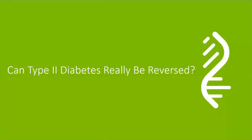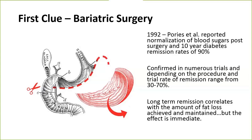The first place to look was back to bariatric surgery — the first hint that something may be going on that is reversible. In 1992, the first study came out showing 10-year remission rates of 90% in bariatric surgery. Further studies over time, depending on the procedure, showed remission ranges of 30% to 70%. What's fascinating is that long-term remission correlates with weight loss. But the reversal came within the first few weeks — almost immediately you would start to see control of glucose and reduction of medications for these patients.